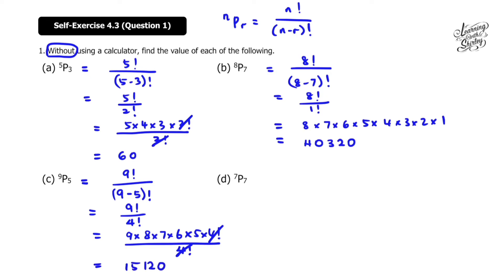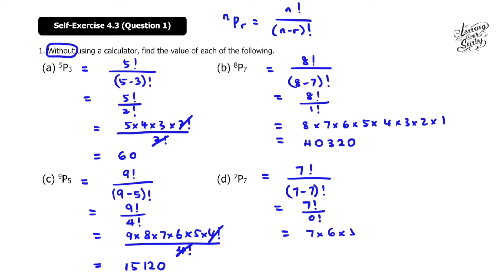Let's look at D. 7P7 equals 7 factorial over (7 minus 7) factorial, so 7 factorial over 0 factorial. We know that 0 factorial equals 1. So 7 factorial is 7 times 6 times 5 times 4 times 3 times 2 times 1, and the answer is 5,040.